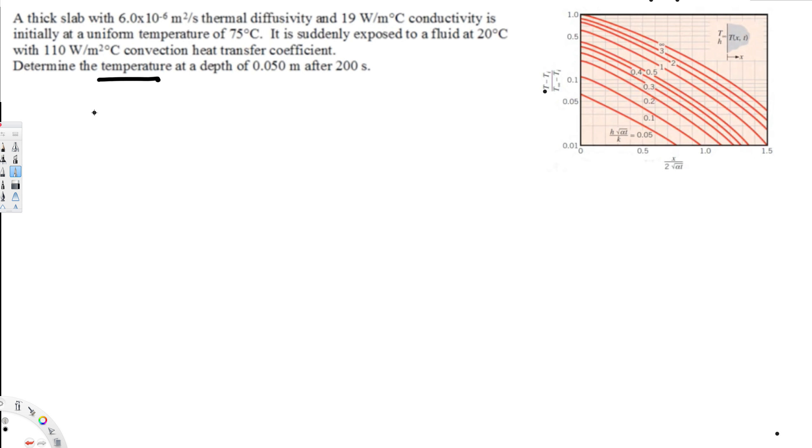So similarity variable is given by eta. Eta is equal to x over 2 square root of alpha t, and x is this depth, that is 0.05 over 2, and alpha is thermal diffusivity. So that is going to be 6 times 10 to the power of minus 6 times time.